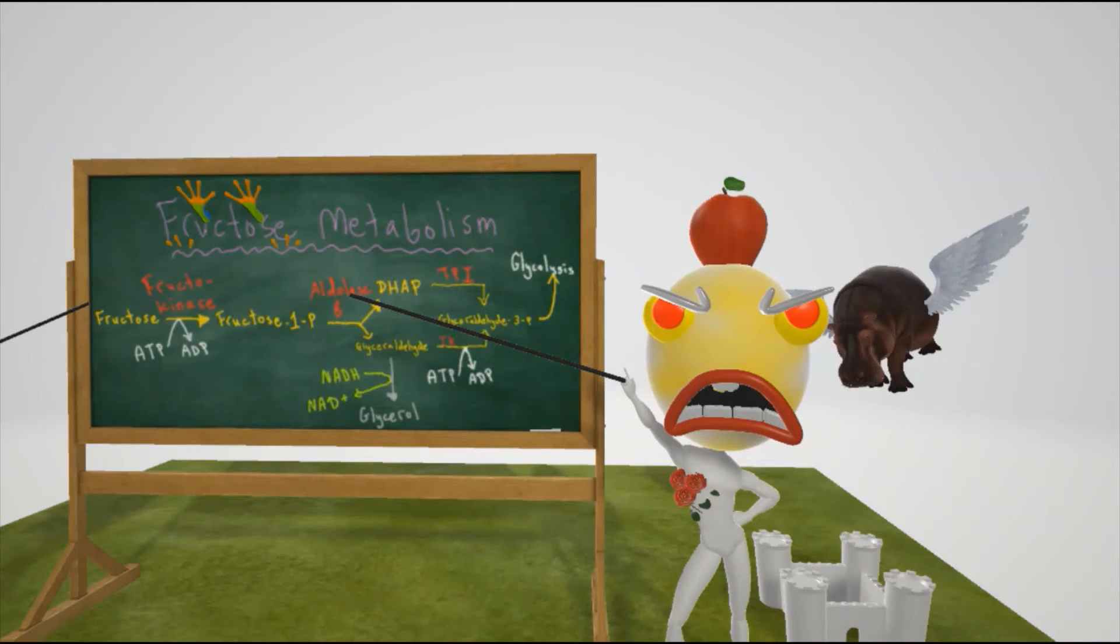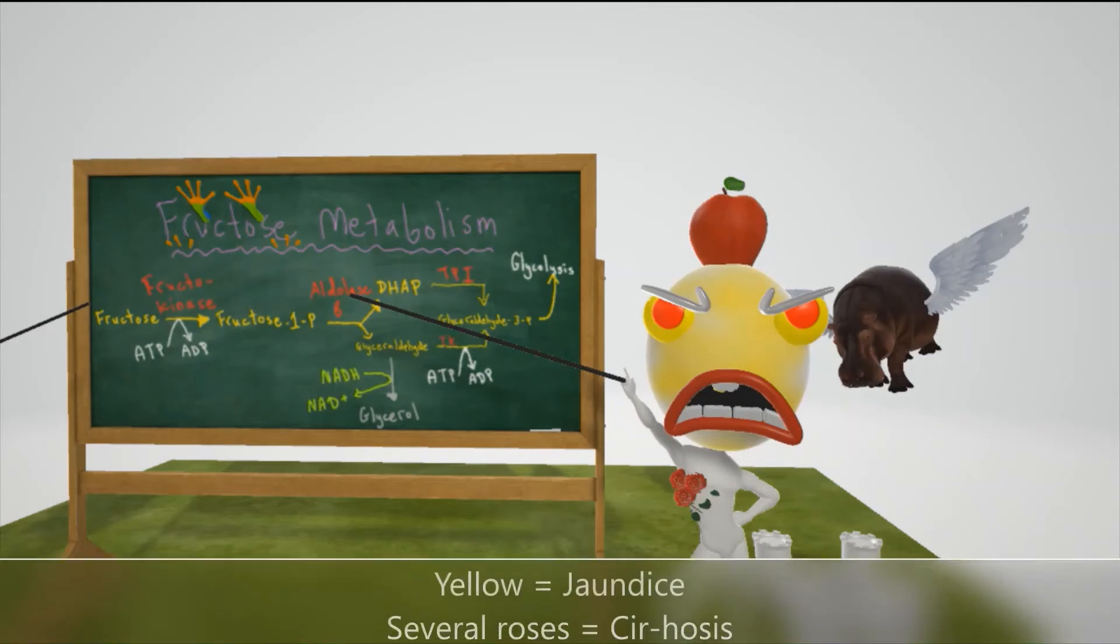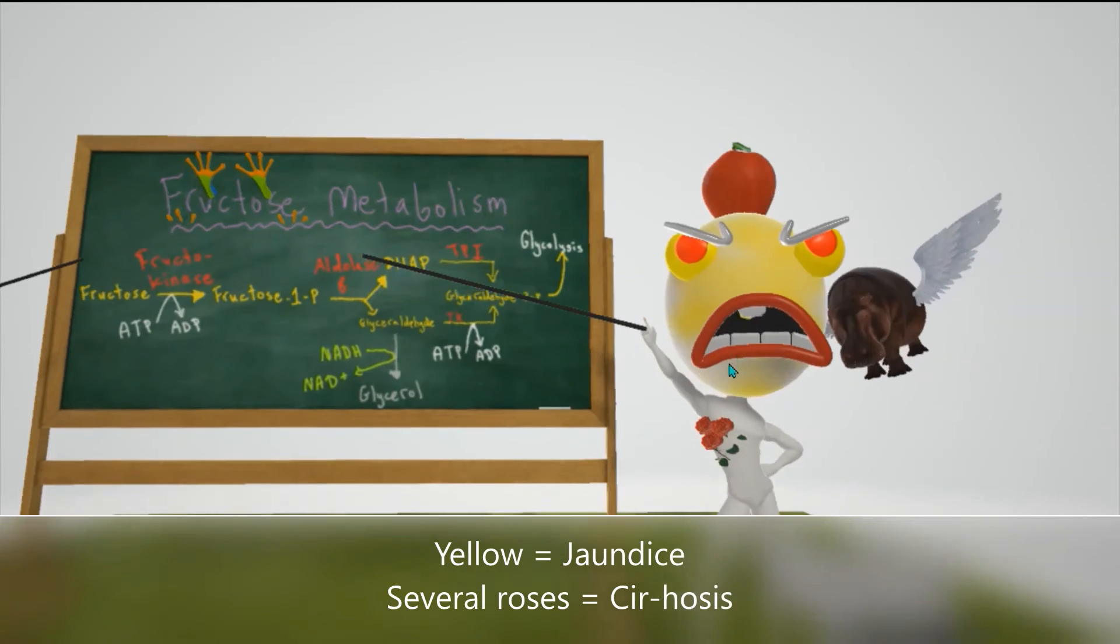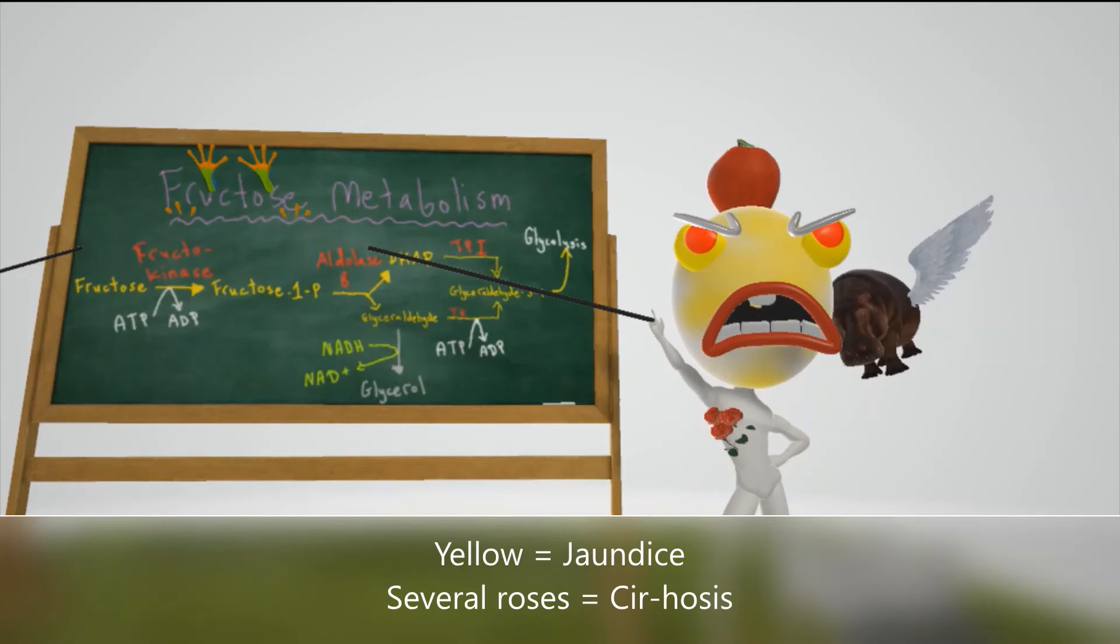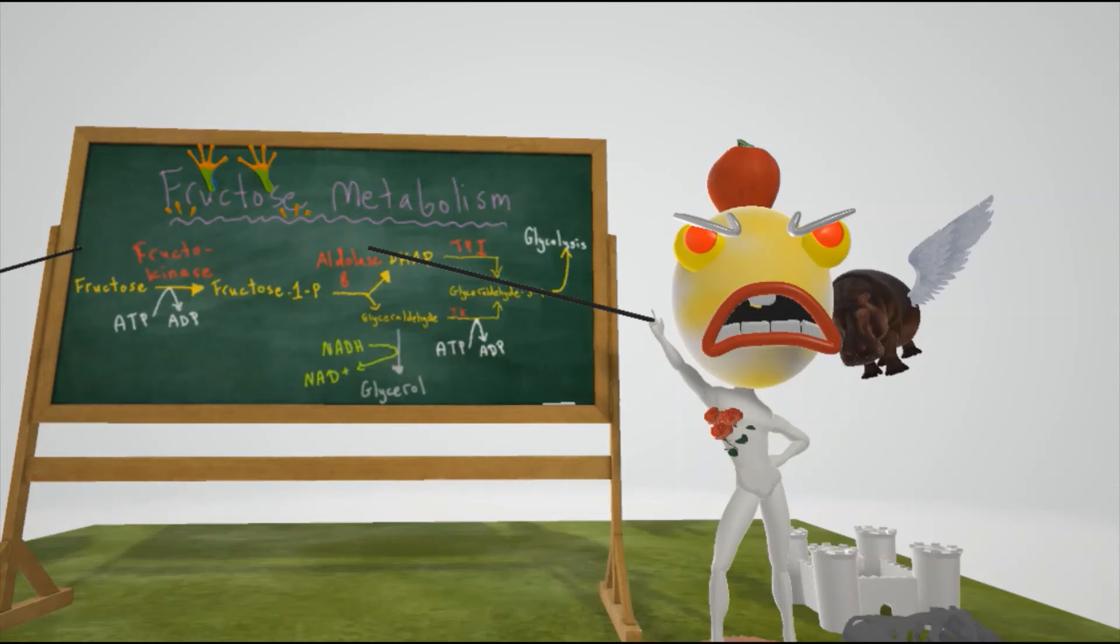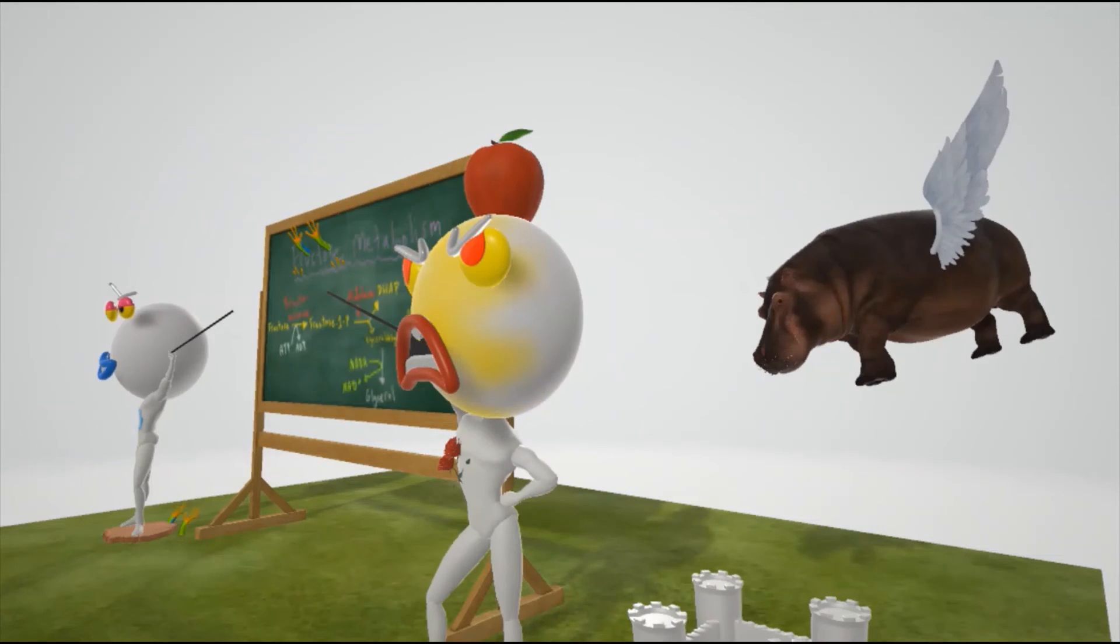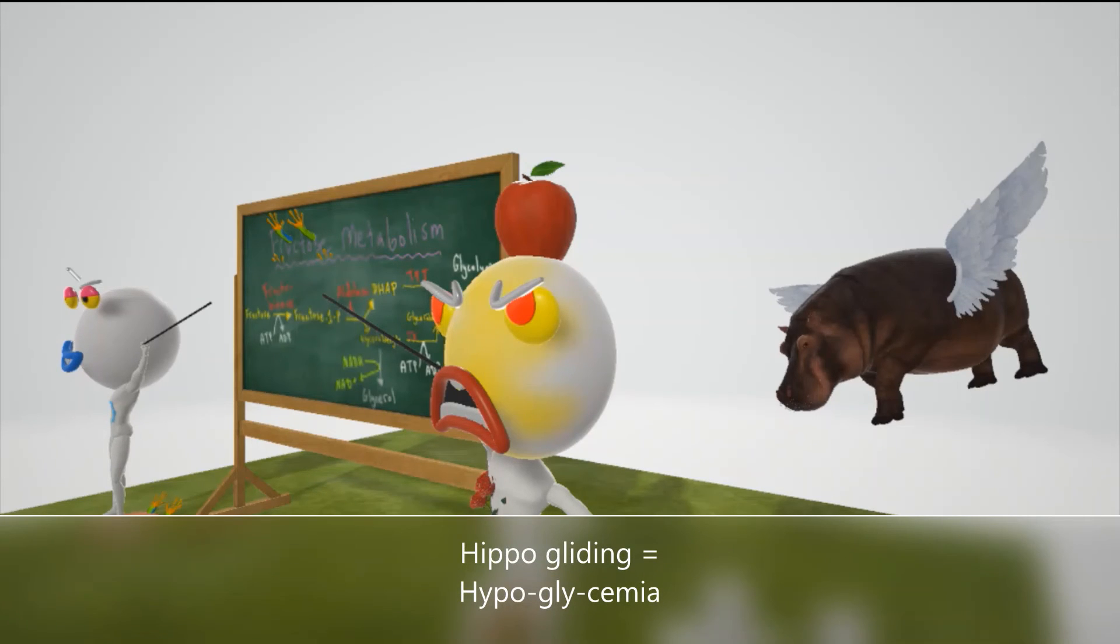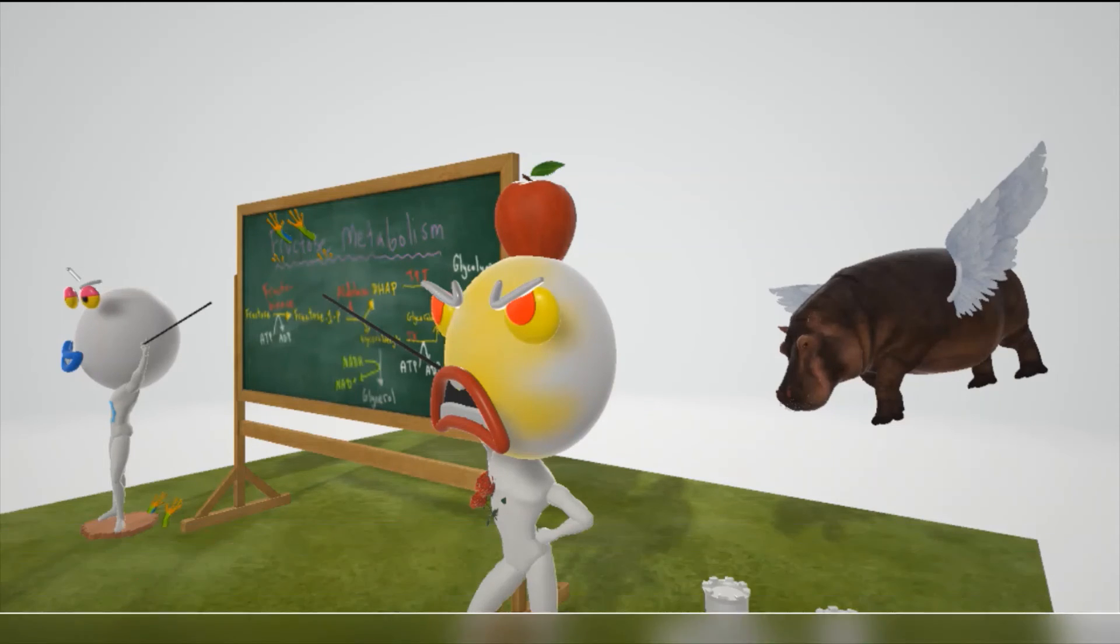You might have noted that the teacher's face is kind of yellow to help us remember the jaundice seen in hereditary fructose intolerance. He has several roses coming out of his liver over here to help us remember the cirrhosis. Several roses for cirrhosis. He's vomiting because vomiting is also another finding. And he has this hippo gliding behind him. Hippogliding for hypoglycemia seen in hereditary fructose intolerance. As you mentioned, sugars are not being made and that's going to lead to hypoglycemia.